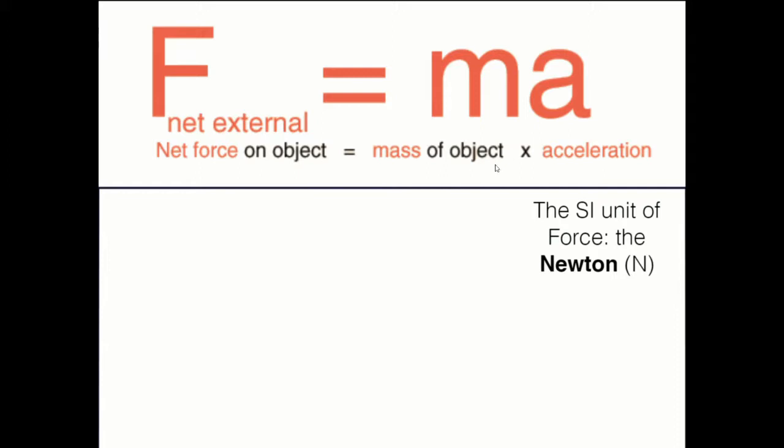F equals MA. If you get A alone, you will see that A equals F over M. So direct proportion exists between A and F, and inverse proportion exists between A and M.